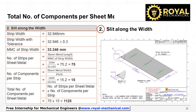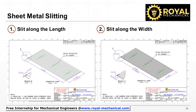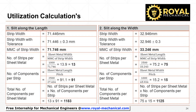Multiply the number of strips per sheet metal and the number of components per strip to calculate the total number of components per sheet metal. By slitting the sheet metal along its width, we can produce 1125 components. Comparing option 1 and option 2: slitting along the length gives 1183 components, while slitting along the width gives 1125 components. Slitting along the length produces a higher number of components; hence we shall select option 1 for our design.